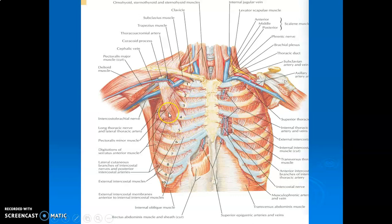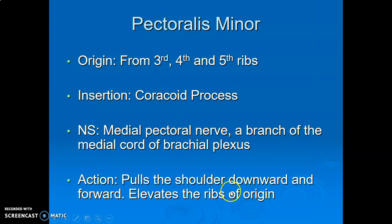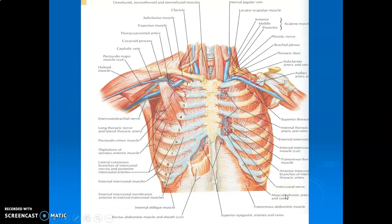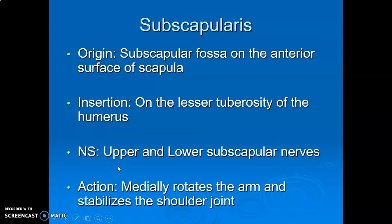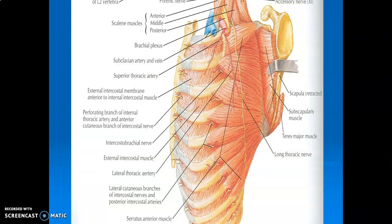Pectoralis minor pulls the shoulder downward and forward and elevates the ribs from where it originates. Subscapularis comes from the subscapular fossa — the anterior fossa of the scapula — and inserts on the lesser tuberosity of the humerus. It is innervated by both upper and lower subscapular nerves from the posterior cord of the brachial plexus. Subscapularis causes medial rotation of the arm and stabilizes the shoulder joint; it is part of the rotator cuff.